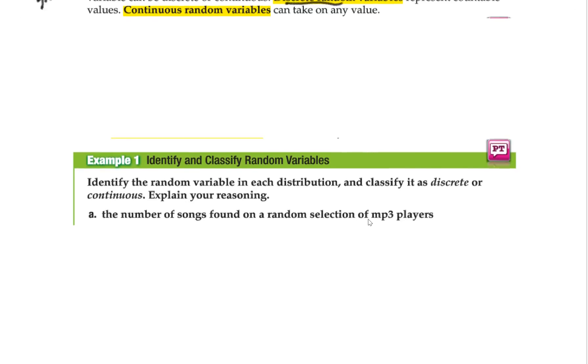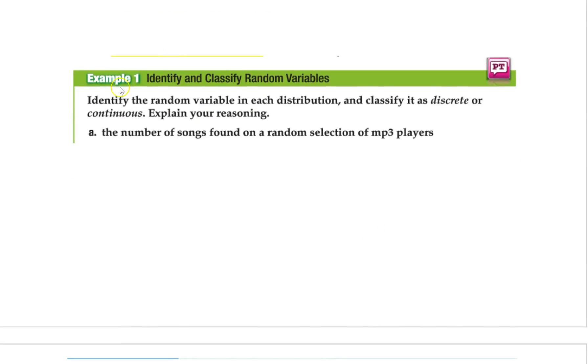So let's go identify it. The number of songs found on a random selection of MP3 players. Could you count the number of songs in your phone? Is your phone going to have 31.45 songs? No. It's going to be countable. It's going to be 30 or 40 or 500, whatever you have. So this is discrete. You could count them. You're not going to get half a song.